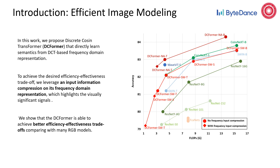To achieve the desired efficiency-effectiveness trade-off, we leverage input information compression on its frequency domain representation, which highlights the visually significant signals. The DC former achieves a better efficiency-effectiveness trade-off compared with many RGB models, as shown here in this figure.